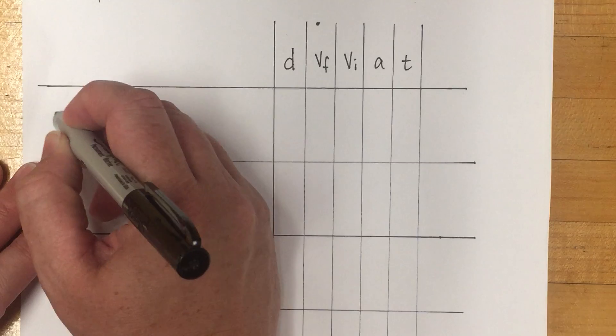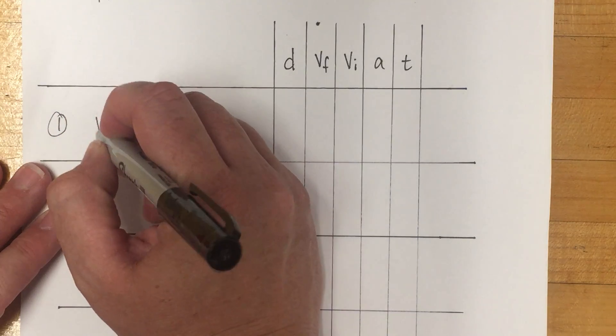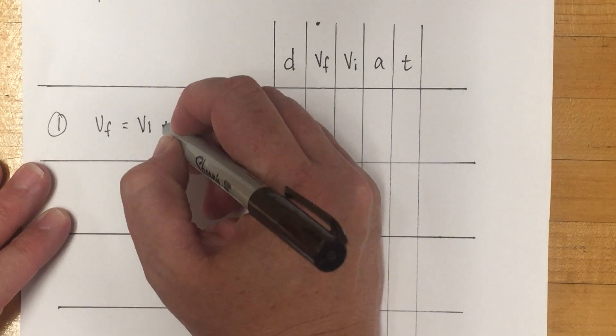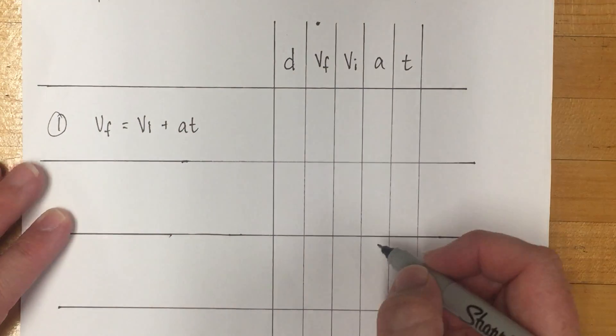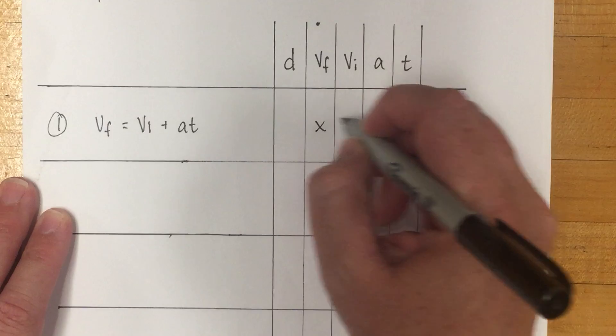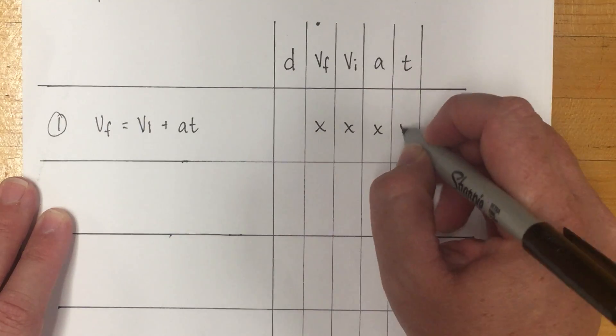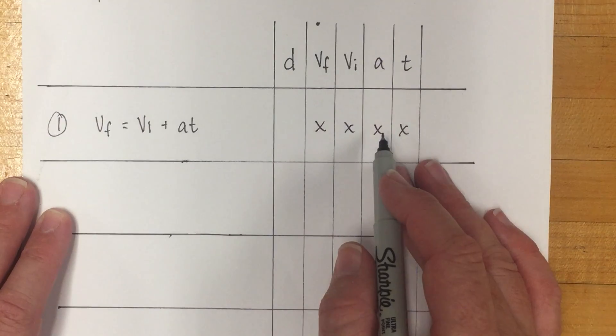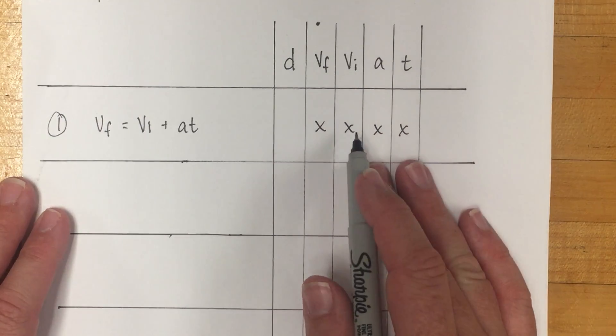Equation one that we use is vf equals vi plus at. It has vf, vi, a, and t in it. So if you know three of these and you're looking for one, you'll have the information to find it.